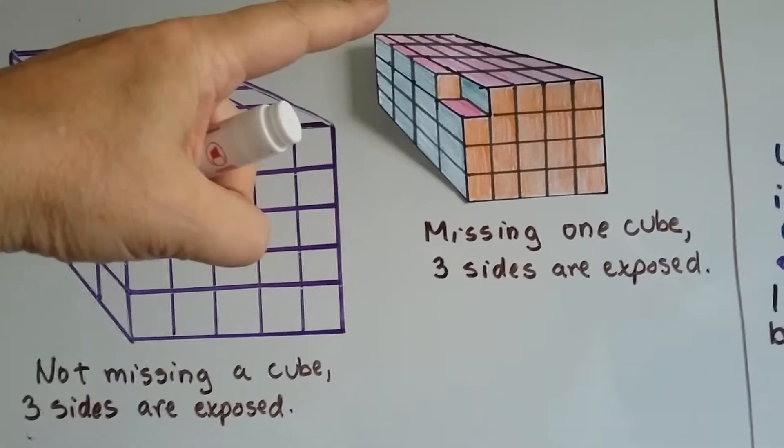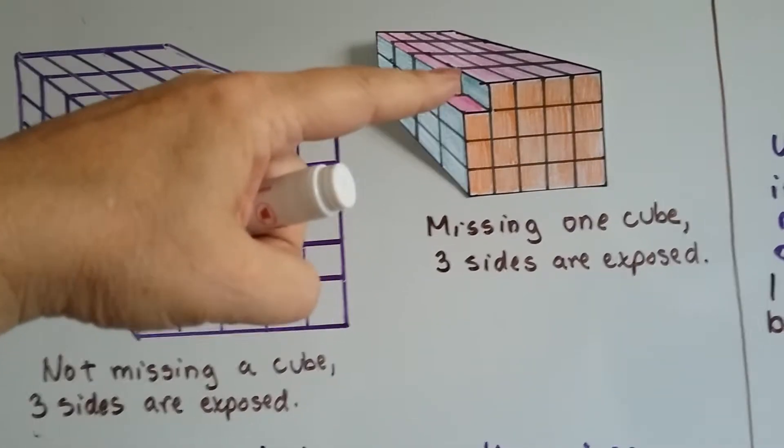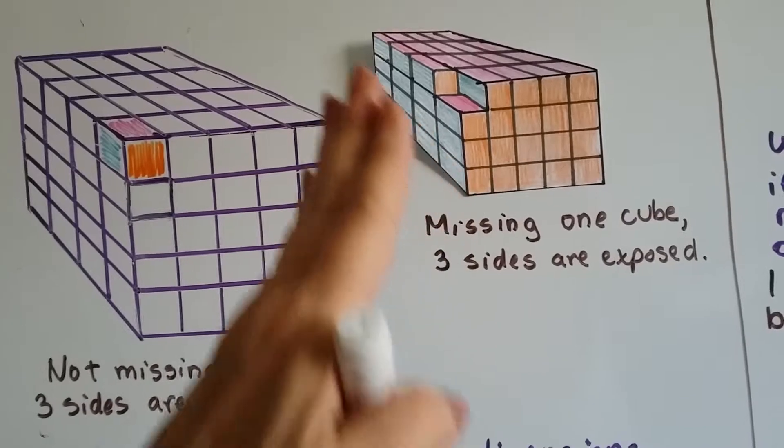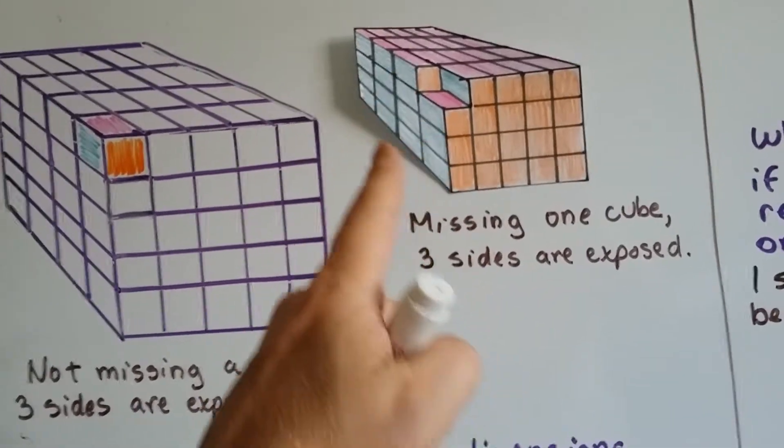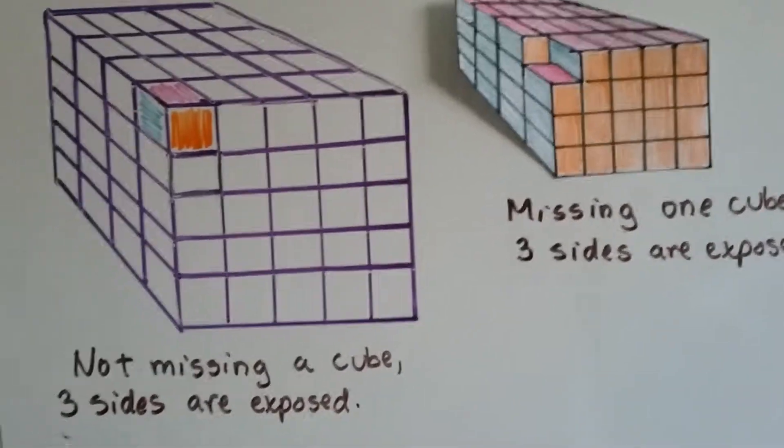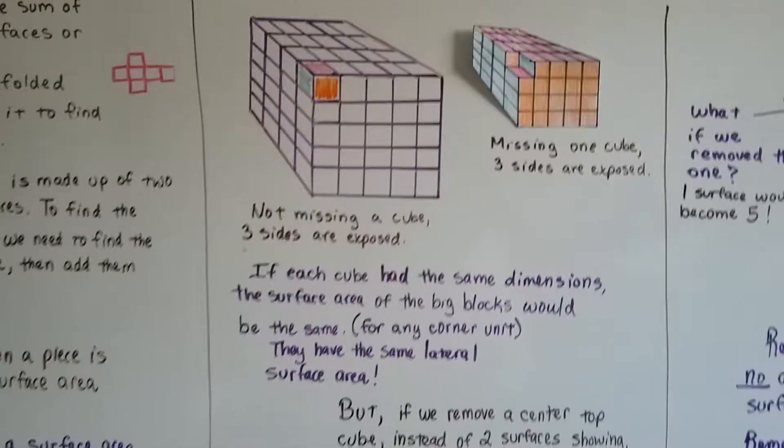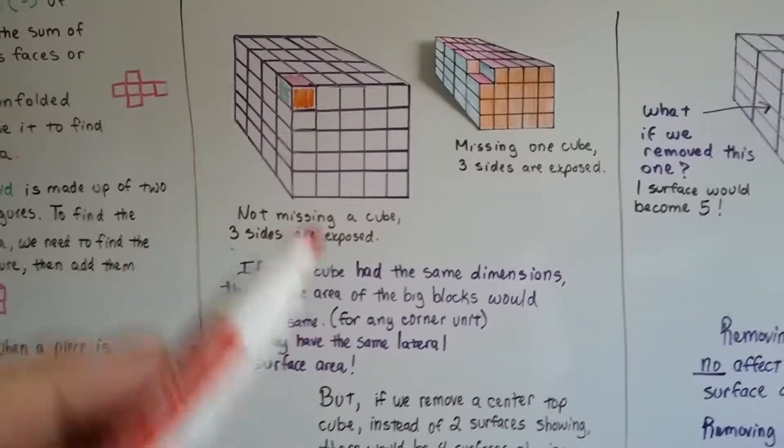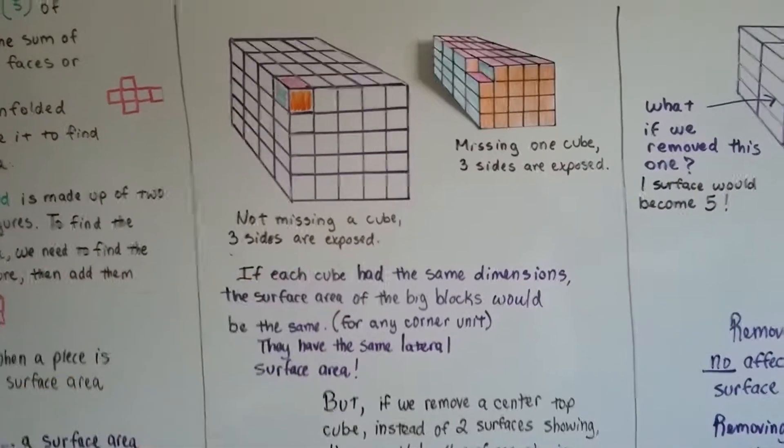If you looked at all the pink tops, this pink top is part of the surface area for here. And the blue side area, that blue side gets added to this area, and the orange one gets added to the front. So they have the exact same lateral surface area. If each cube had the same dimensions, the surface area of the big blocks would be the same. Now that's only if we take out a corner unit. We could take out any corner unit and it would do that.